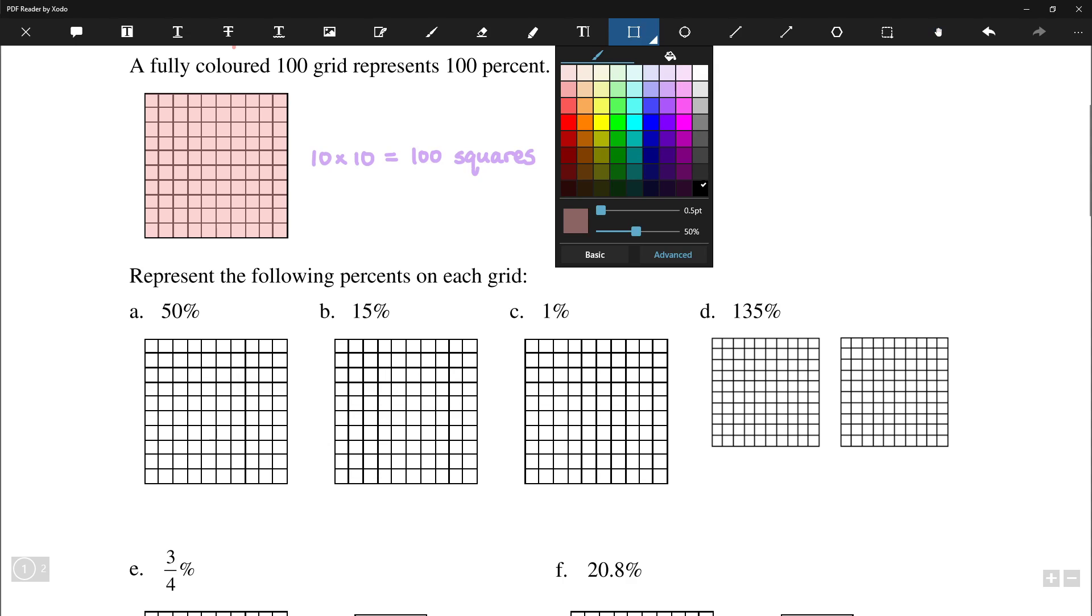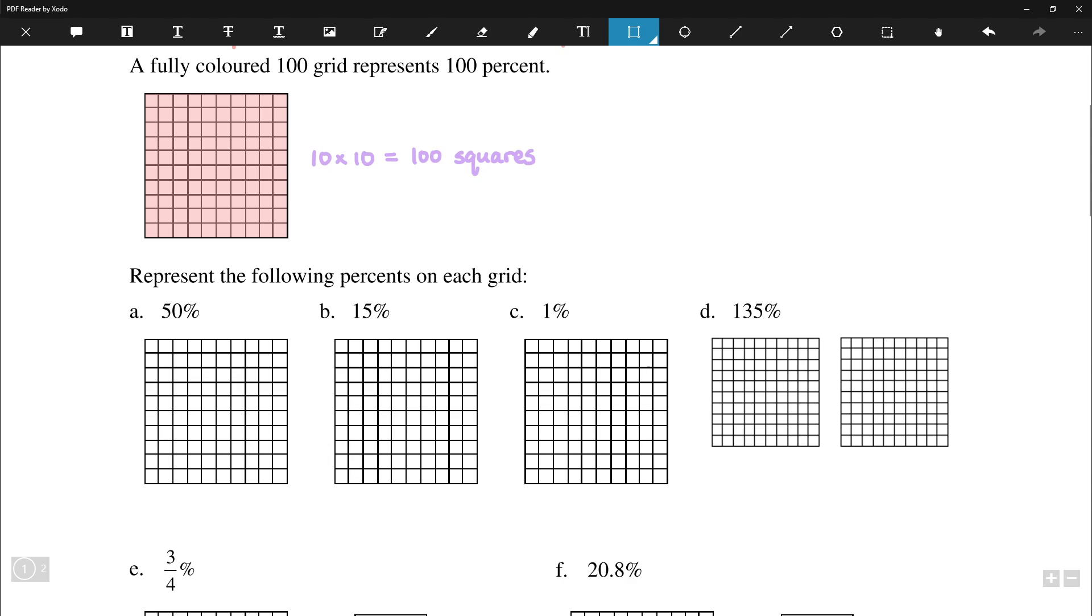So here are some familiar percents. Let's look at the first one. 50% means we shade in half of the squares. As we know, 50% is also known as one half.